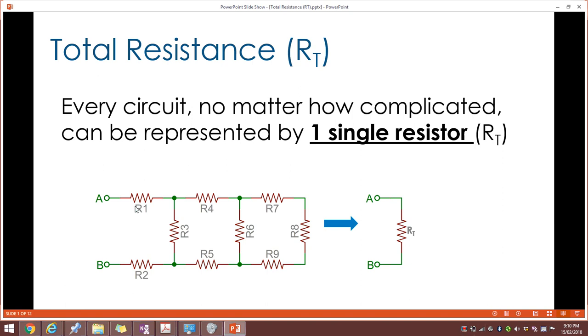So in this diagram we've got one, two, three, four, five, six, seven, eight and nine resistors which can be effectively replaced by one single resistor. We refer to that as the total or effective resistance.